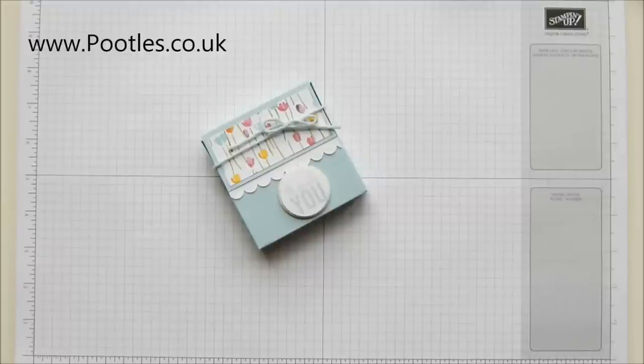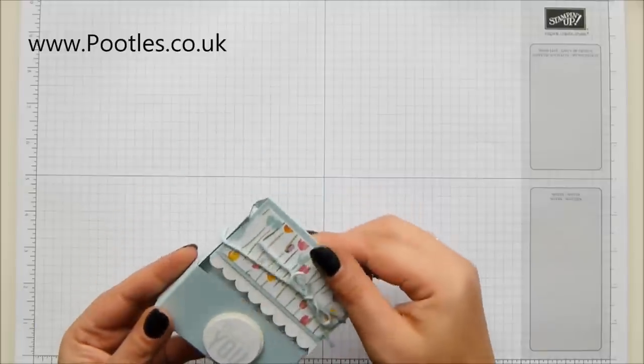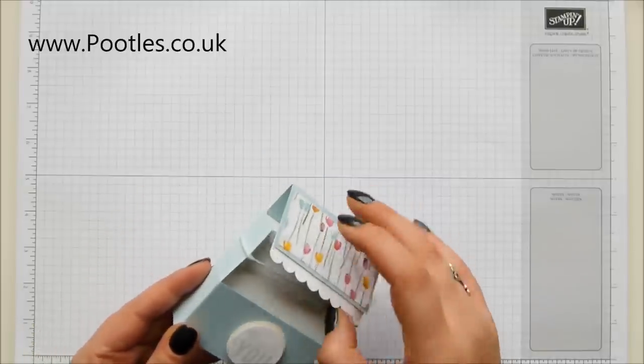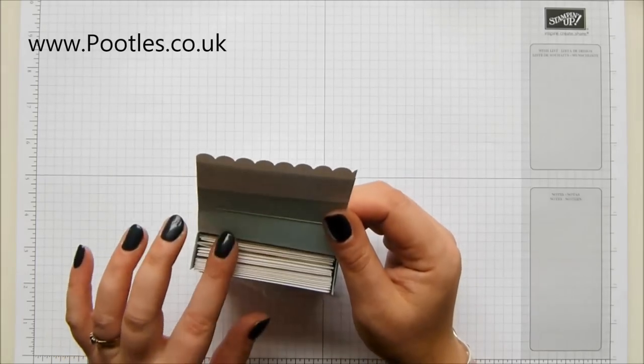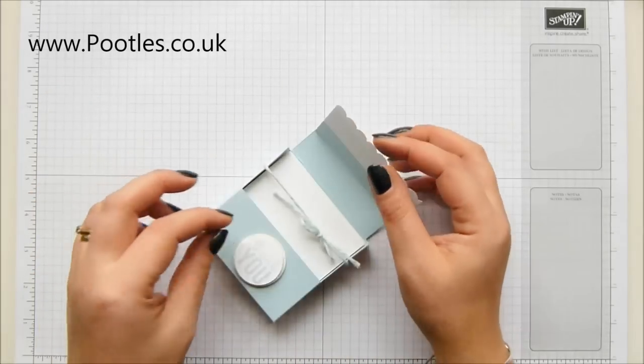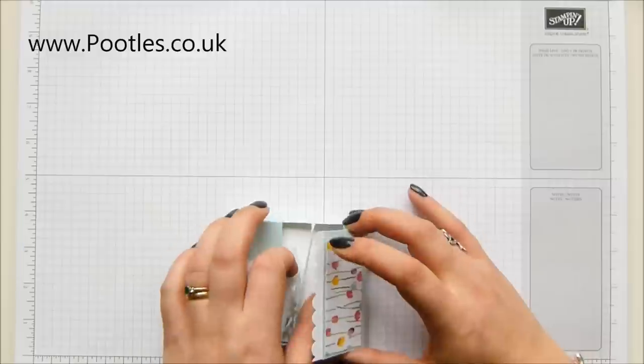Hi there, it's Sam from Poodles.co.uk. Thank you very much for joining me today. Today's project is a little box holder for 3x3 cards, which I don't typically have in there. I do have their envelopes, which just proves to you that you can fit the cards and obviously the envelopes in there because envelopes are bigger than the 3x3 cards, and it's rather sweet.